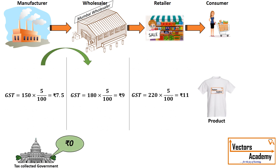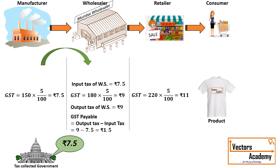When the manufacturer sells the product to the wholesaler, he collects GST of 7.5 rupees per product, which goes to the government. This 7.5 is also termed as the input tax of the wholesaler — the tax paid when he brings in the product. When the wholesaler sells to the retailer, the output tax is 9 rupees. Since the wholesaler already paid 7.5 to the government, he only needs to pay 1.5 rupees more — this is called GST payable. The government thus receives 7.5 plus 1.5, totaling 9 rupees in GST.